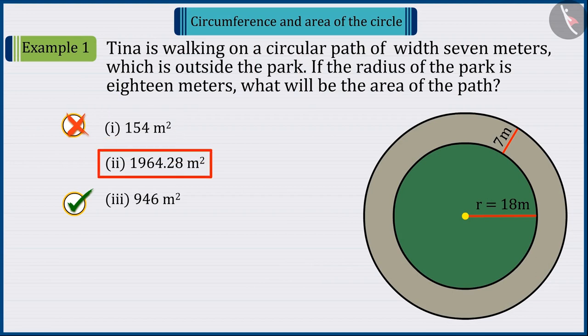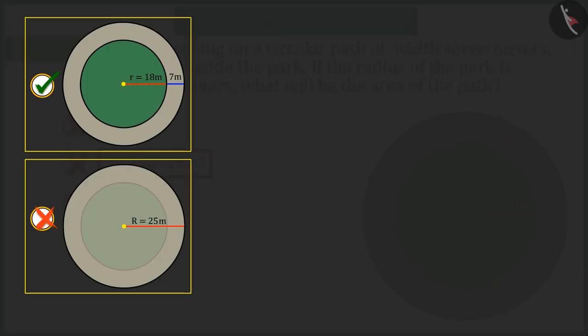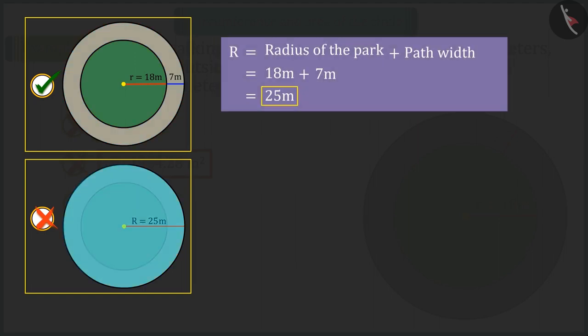If you have selected option 2, it was a good try. But, it was the wrong answer. Because here, you are not finding the area of the path. Rather, the area of the circle by the total radius of the park and the path. Which is why you get the wrong answer.